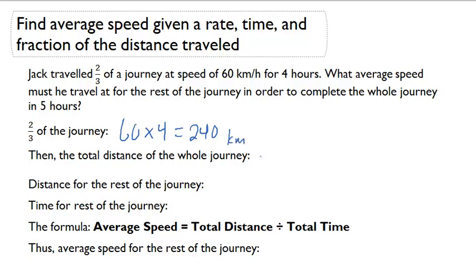Now I can figure out the total distance of the journey. I know that 240 has to be two-thirds of the journey. So I can do 240 divided by two-thirds, which is the same thing as 240 times 3 over 2, and that's going to equal 360 km. So the total distance of the journey is 360.